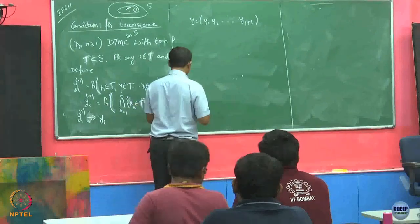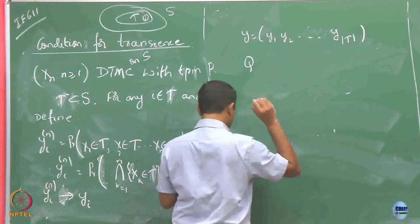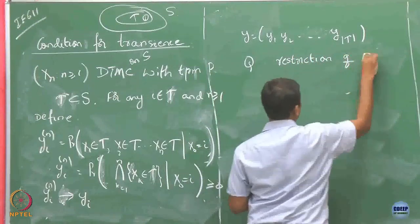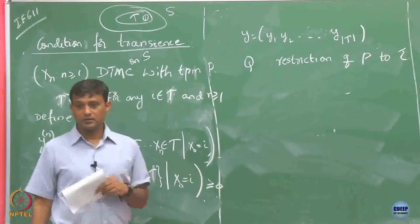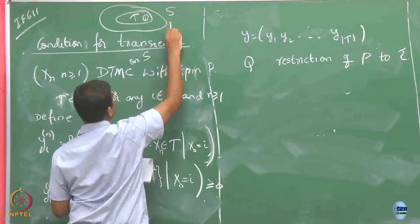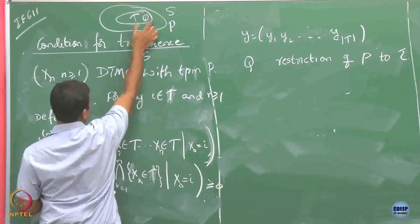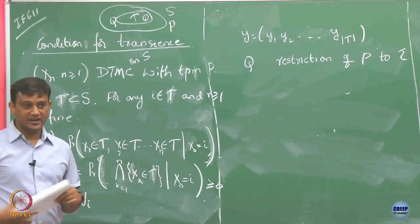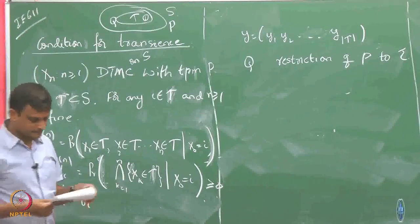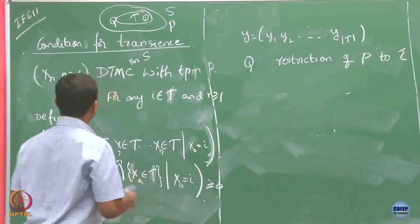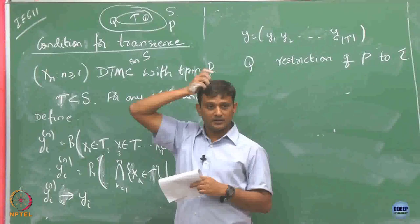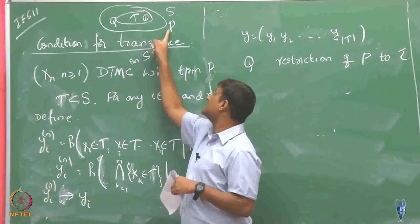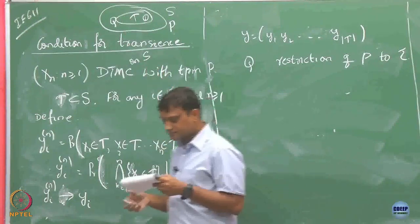Now I am going to denote by Q the transition probability matrix restricted to only the states in tau. P is the transition probability matrix on the entire state space. Q is the restriction of P to the set T. I can always do this restriction by removing all states which are outside my set T.